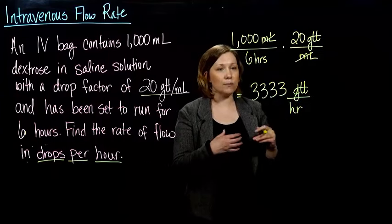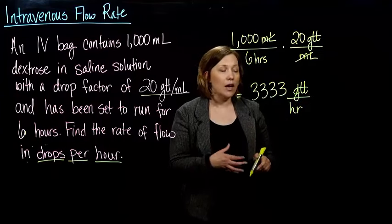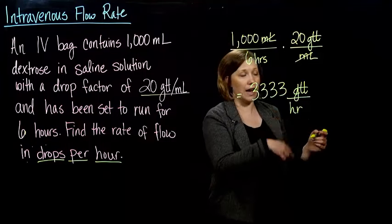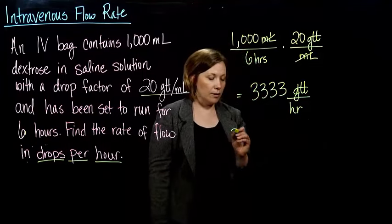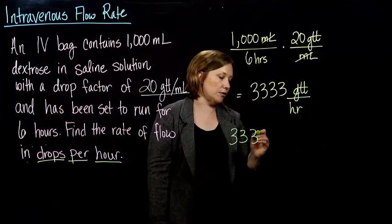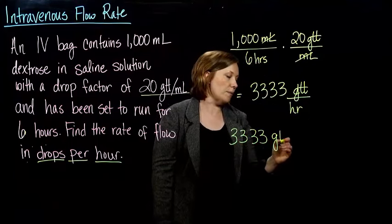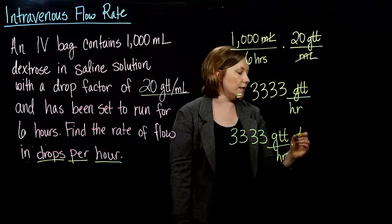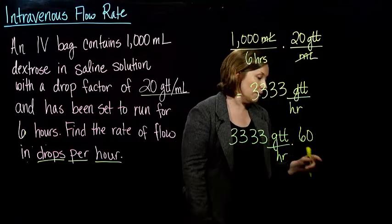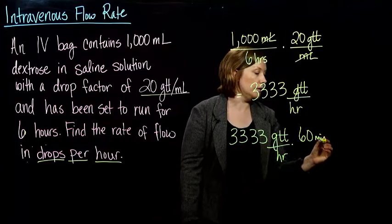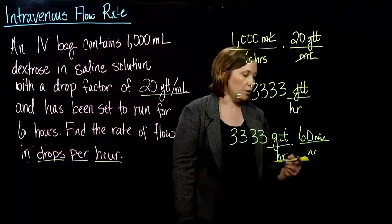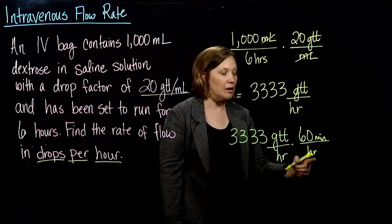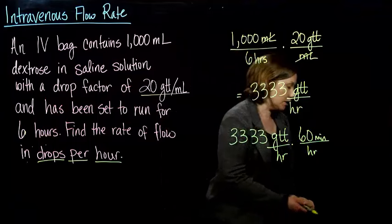If you wanted to change it into drops per minute, what would you do? You would just create a conversion factor for changing hours to minutes. So we would take the 3,333 drops per hour, and we know it takes 60 minutes to make an hour. But look, my hours don't cancel out, right? That's not going to work, so what do I have to do? I should have put the hours on the top.